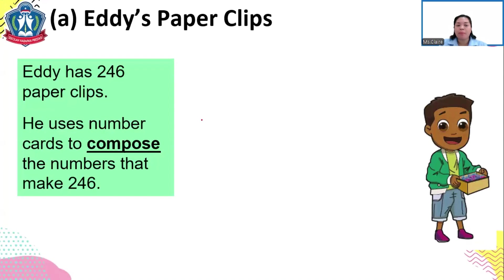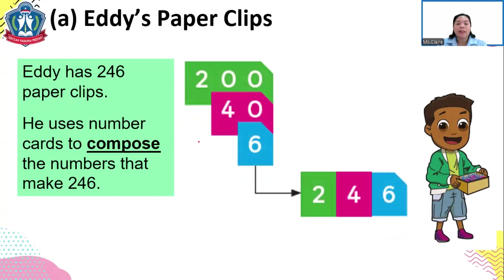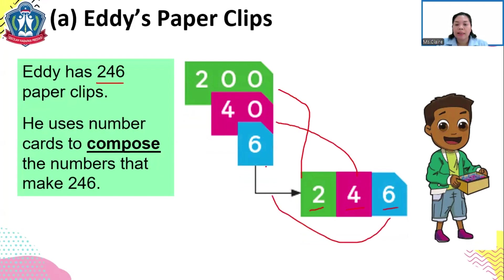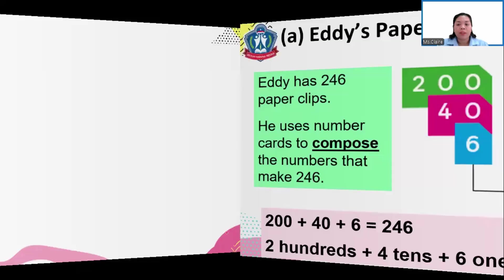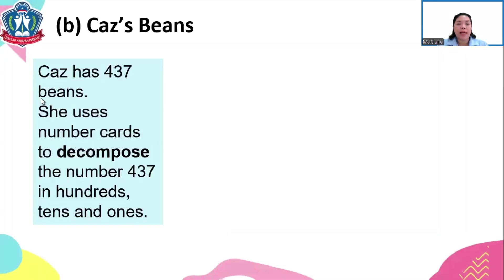Eddie has 246 paper clips. He uses number cards to compose the numbers that make 246. The digit 2 is 200, the digit 4 is 40, and the digit 6 is 6. So 200 plus 40 plus 6 is 246, or you can say 2 hundreds plus 4 tens plus 6 ones equals 246. That is what we call composing.